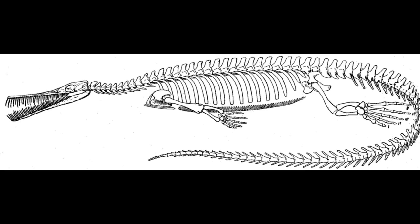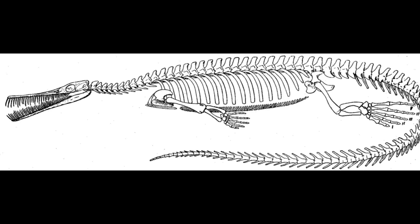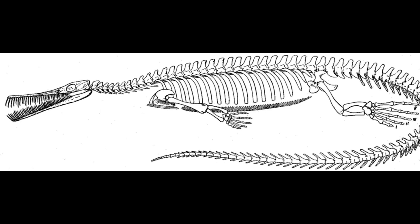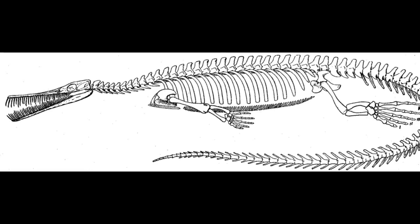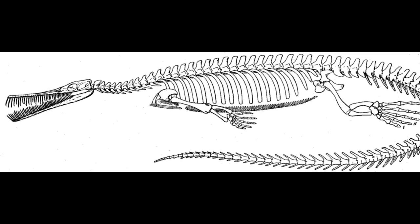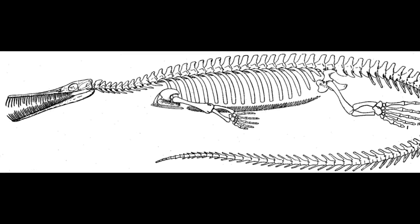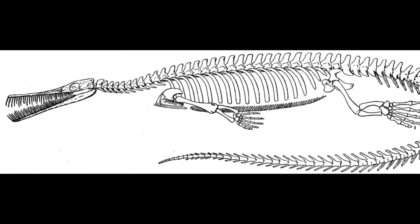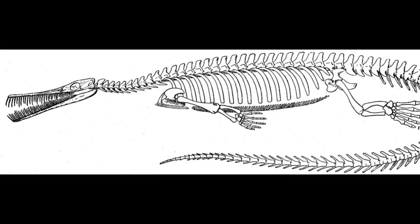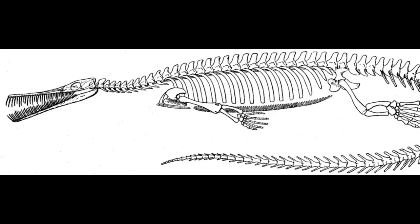If mesosaurs were parareptiles, then their elongated, snapping jaws would contrast quite sharply with the blunt, robust skulls of most members of this clade.